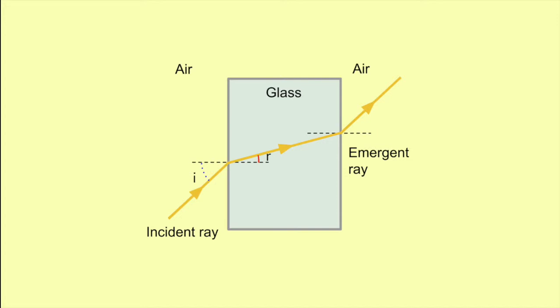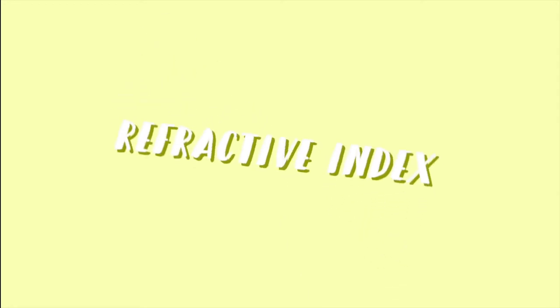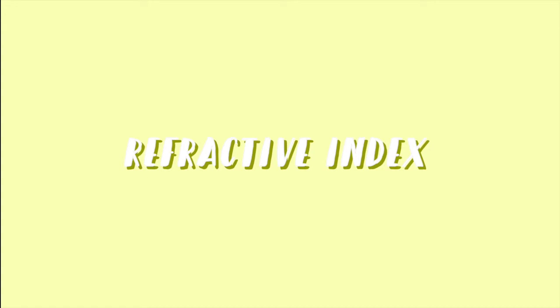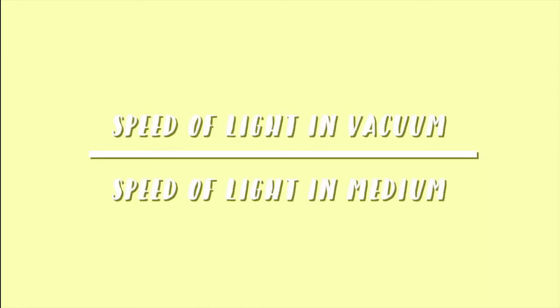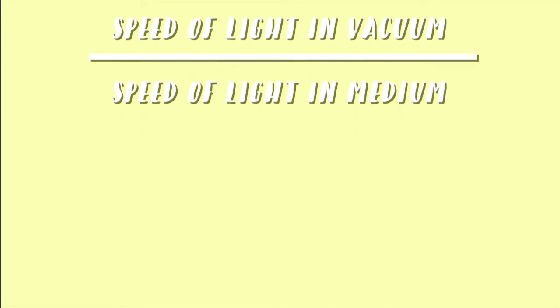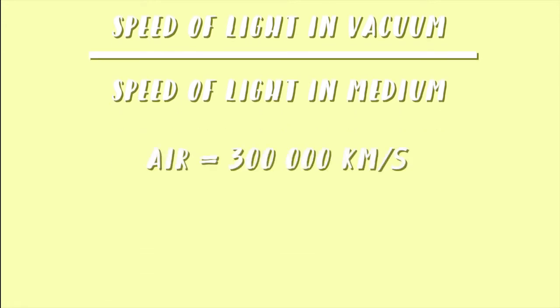Because the light ray bends towards the normal as it enters the glass block, the angle of refraction is smaller than the angle of incidence. Another term used in refraction is the refractive index. The refractive index is the measure of the bending of a light ray when passing from one medium to another. The refractive index equals the speed of light in vacuum over the speed of light in medium. In a vacuum, the speed of light is 300,000 km per second.